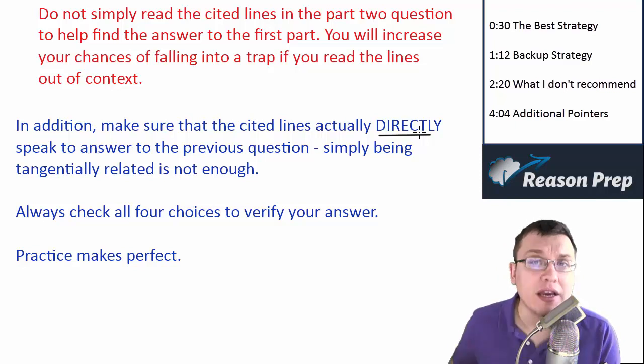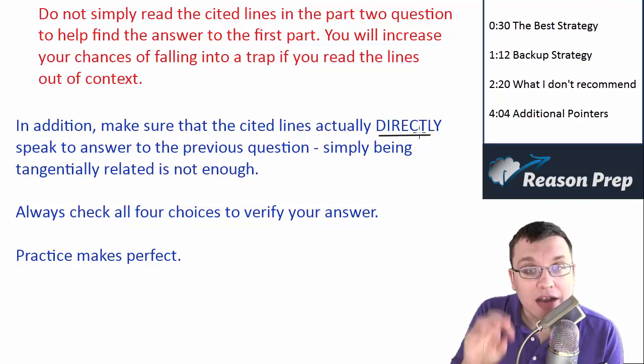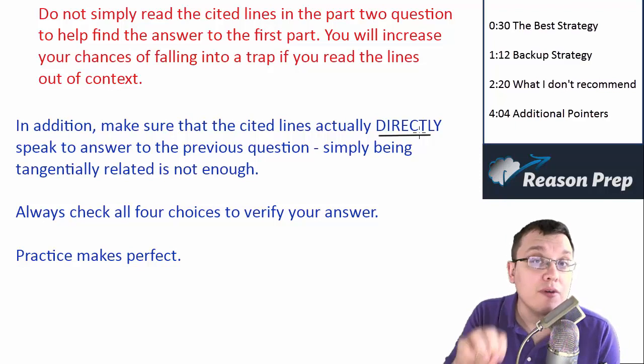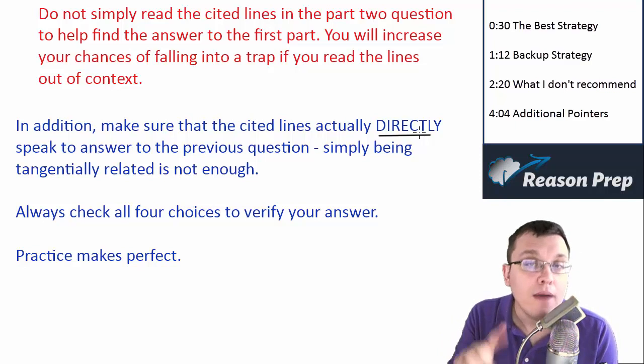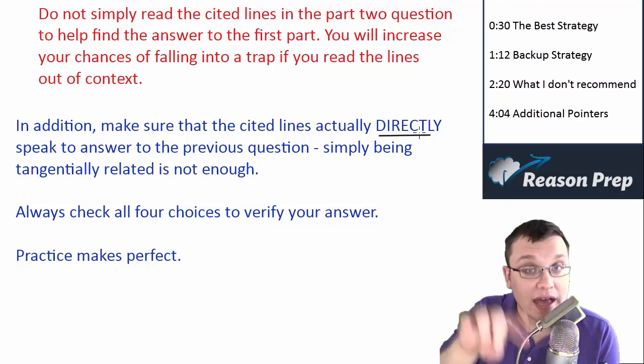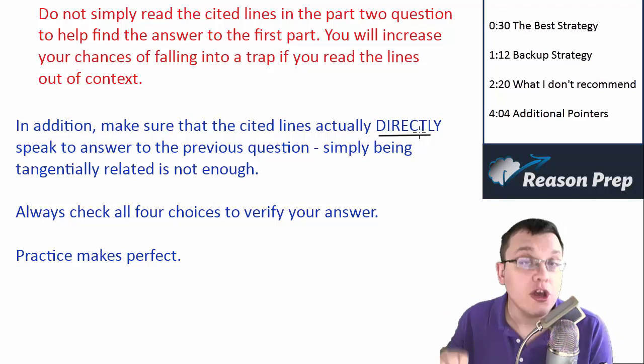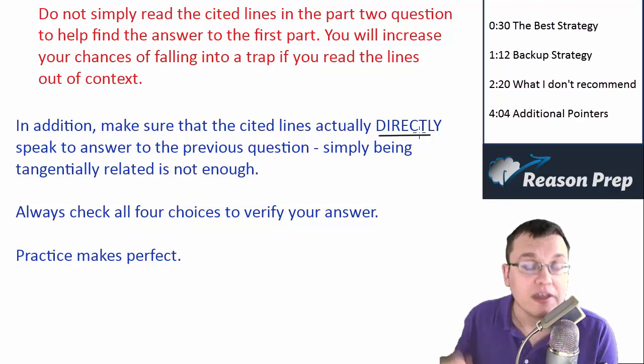In addition, make sure that cited line isn't part of a bigger argument where you might say 'oh, those lines don't really fit, but they're part of a paragraph which makes the point from the previous question, so maybe I'll pick C for that reason.' No, because you need the answer to be in the cited lines - not around the cited lines. We talked about this in the trap choices section.